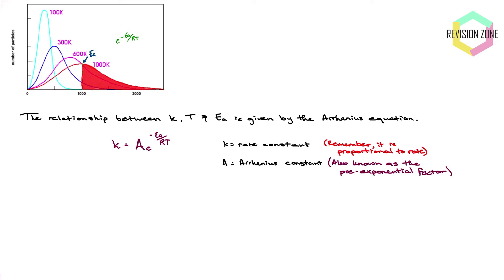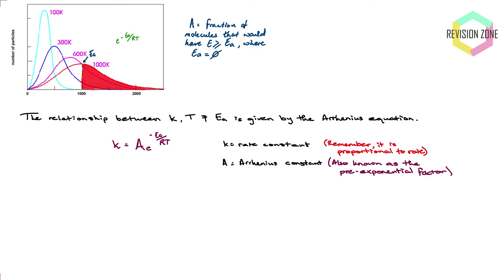The next component is the Arrhenius constant, capital A, sometimes called the pre-exponential factor. Remember that term because in an exam you may be asked to work out the pre-exponential factor, which just means working out the Arrhenius constant. It represents the fraction of molecules that would have energy greater than or equal to the activation energy where Ea equals zero J/mol — essentially a reference point for how many particles have sufficient energy.